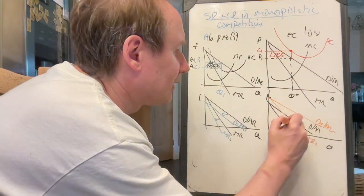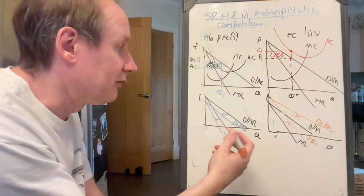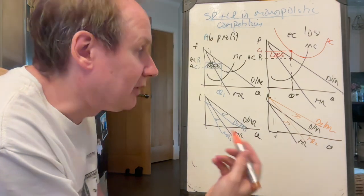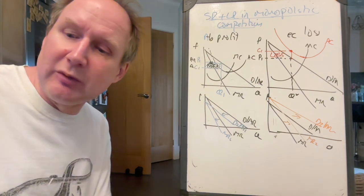So where firms are making a profit to start with, new firms enter, resulting in demand falling. Where firms are making a loss, some other firms leave, meaning there's more market share for the remaining ones. So when is this process going to end?